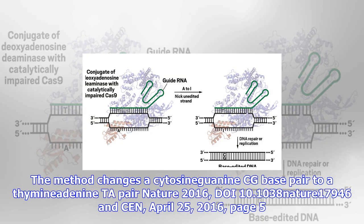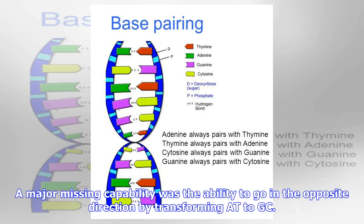A major missing capability was the ability to go in the opposite direction by transforming TA to GC. Liu's group has now closed that circle by developing adenine base editing (Nature 2017, DOI: 10.1038/nature24644).